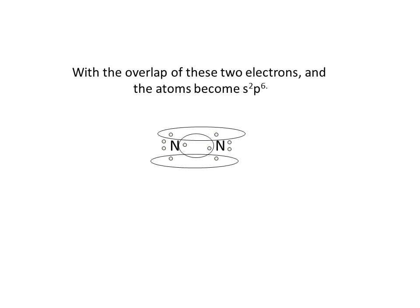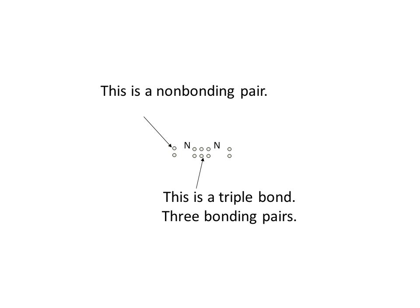If I redraw this so that the pairs of electrons are between the two nitrogens, you can see that each nitrogen now has eight electrons and is stable. This is called a triple bond, three pairs of electrons, and of course the pair of electrons on the outside of each nitrogen are the non-bonding pairs.